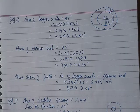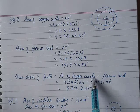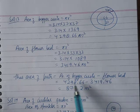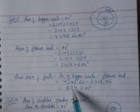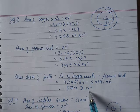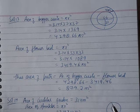That's the area of path. Bigger circle minus the smaller circle is 879.2 m². That's the area of the path.